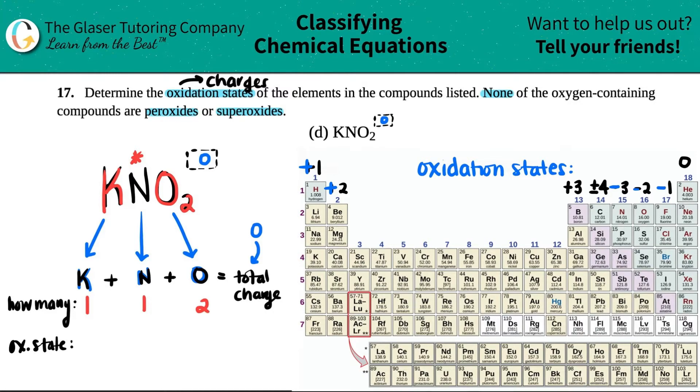Now let's do our oxidation states. Potassium is in Group 1. Potassium is always going to have a +1 charge. It's in Group 1, so I'm going to put +1 here.